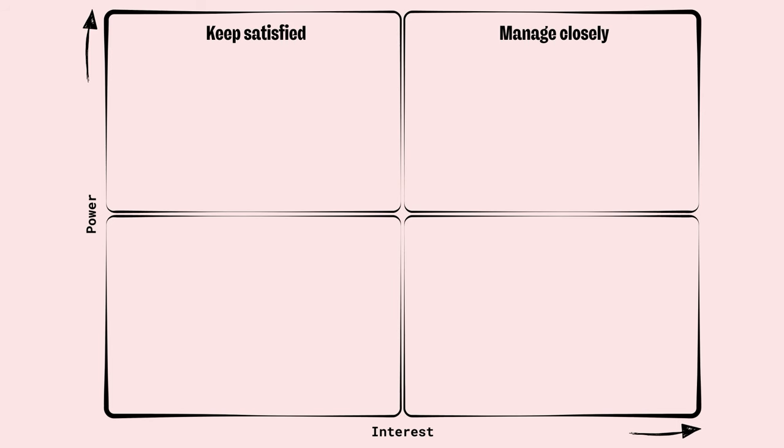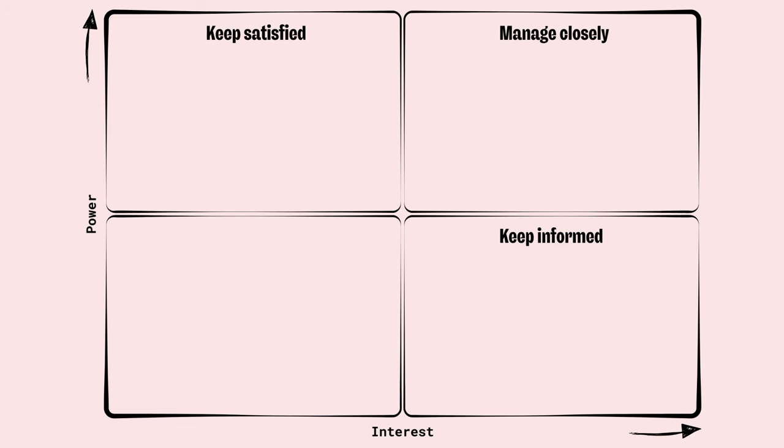Stakeholders in the top-left quadrant aren't currently involved in your project but they hold serious sway. It's key to keep them satisfied, because if they see your work affecting theirs they might hop on board. Consider touching base with them to ensure their interests are taken into account — although fulfilling their requirements might be just enough to keep them happy.